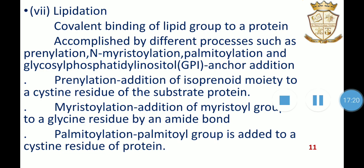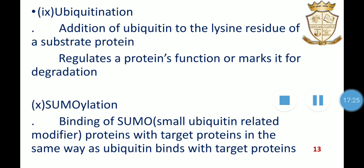Ubiquitination is the addition of ubiquitin to the lysine residues of substrate protein. Ubiquitin is a small protein, and ubiquitination regulates a protein's functions or marks it for degradation. Either a single ubiquitin molecule, known as mono-ubiquitination, or a chain of several ubiquitin molecules, known as poly-ubiquitination, may be attached to proteins. Poly-ubiquitinated proteins are recognized by the 26S proteasomes and subsequently targeted for proteolysis or degradation. Mono-ubiquitinated proteins may influence cell trafficking and endocytosis. Functions include flagging proteins for degradation by proteasomes, immune response, inflammatory response, organelle biogenesis, and signal roles in DNA repair.